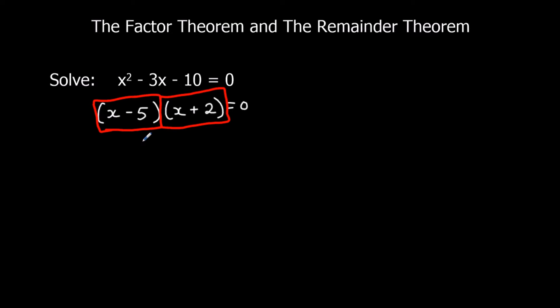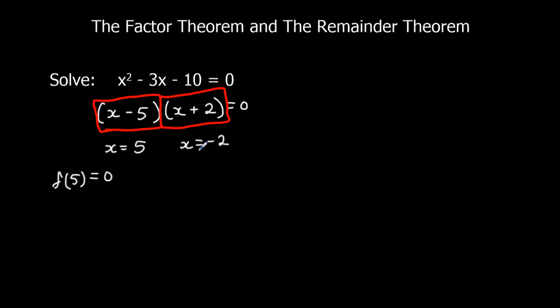If I were going to solve it I'd give answers as positive 5 and negative 2. This leads us to the factor theorem. The factor theorem says: if x minus 5 is a factor, then f(5) will equal 0. So if I substitute 5 into the function I should get 0 out. And if x plus 2 is a factor, then f(minus 2) should equal 0.